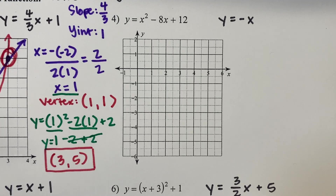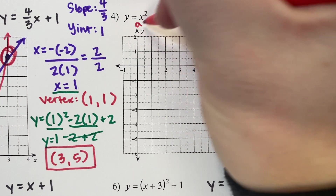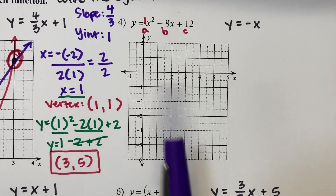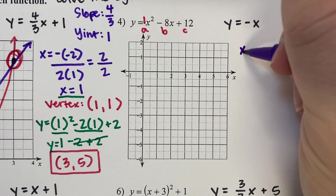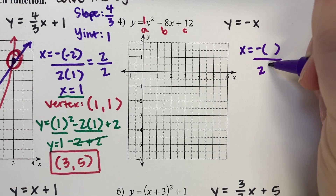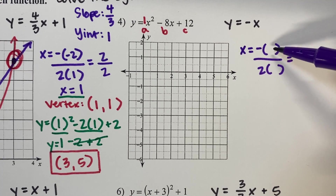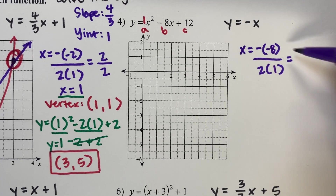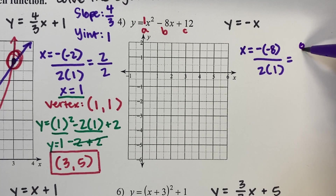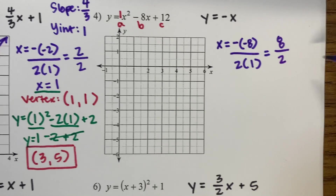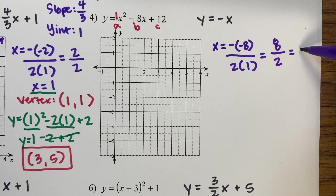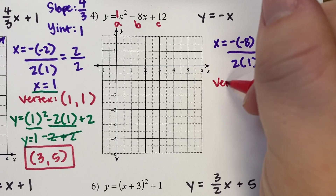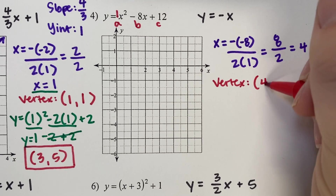Let's do that again. We are graphing a quadratic in standard form and a linear. We have a, b, and c, with a being that invisible 1. Using the vertex formula x equals negative b over 2a: b is negative 8, a is 1. A double negative gives positive 8 on top over 2 times 1, which is 2. Eight divided by 2 is 4. So we solved for the x part of our vertex: positive 4.